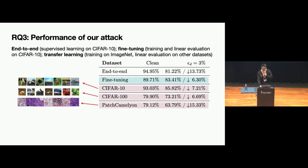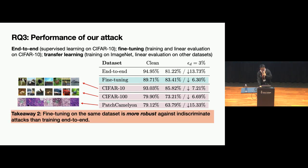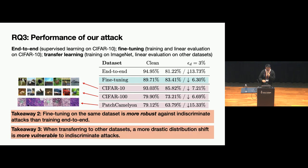Two key takeaways emerge from the results. Comparing fine-tuning on the same dataset versus end-to-end training, fine-tuning is more robust against indiscriminate attacks, with accuracy drop decreasing from 13% to only 6.3%. More significantly, for transfer learning to natural images such as CIFAR-10 and CIFAR-100, attack performance is not that good. However, when a more dramatic distribution shift exists — as with the medical dataset — models are more vulnerable to indiscriminate attacks.